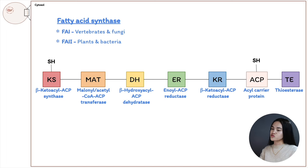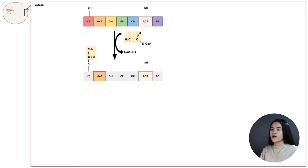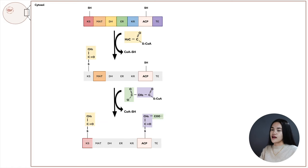Before the actual four-step process of growing the chain, we need to charge the complex with an acetyl group and a malonyl group. The first acyl group from acetyl-CoA is transferred to ACP by MAT (malonyl-acetyl-CoA-ACP transferase), then the acetyl group is transferred to the KS domain, also catalyzed by MAT. The second reaction transfers the malonyl group from malonyl-CoA to ACP, also catalyzed by MAT.